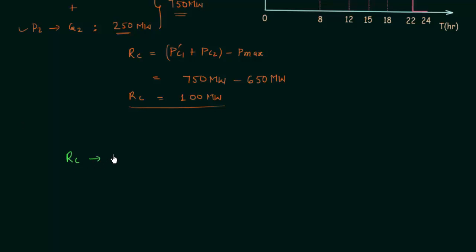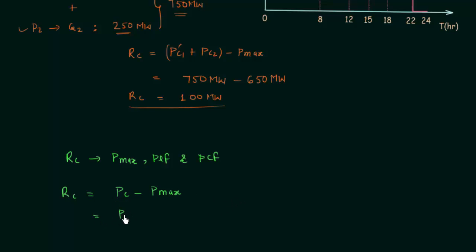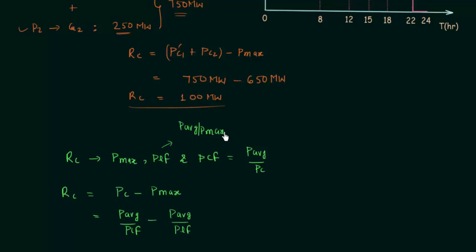Reserve capacity is equal to plant capacity minus the maximum power. Plant capacity we can write as average power over plant capacity factor, because plant capacity factor PCF = average power / plant capacity, so PC = P_average / PCF. Similarly, Pmax we can write as P_average over PLF, because PLF = P_average / Pmax.